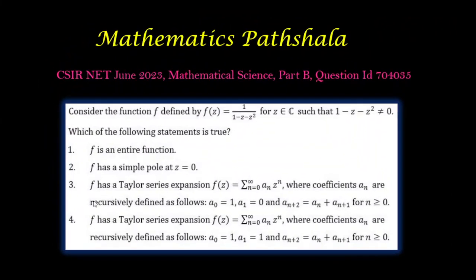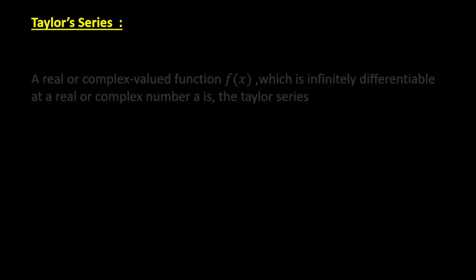Our next two options are similar. f has a Taylor series expansion f(z) = Σ(n=0 to ∞) aₙzⁿ, where coefficients aₙ are recursively defined as follows: a₀ = 1 and a₁ = 0. So here we can see that the Taylor series expansions are the same; the only difference between options 3 and 4 is a₁ = 0 and a₁ = 1. So let's see what is the Taylor series expansion.